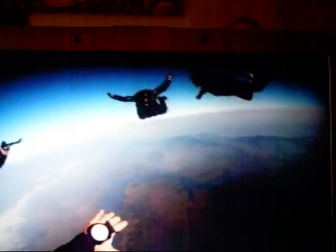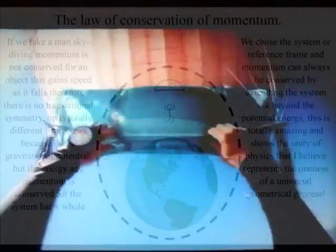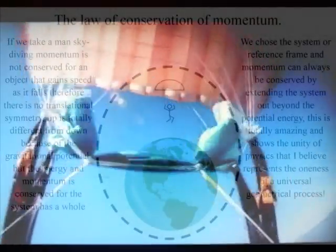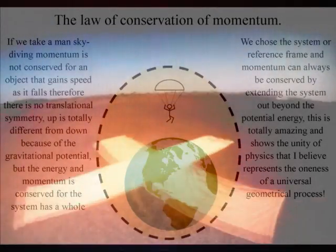If we take a man skydiving, momentum is not conserved for an object that gains speed as it falls. Therefore there is no translational symmetry. Up is totally different from down because of the gravitational potential.